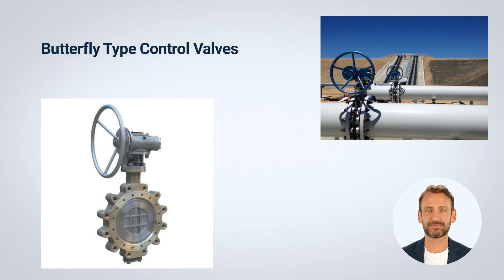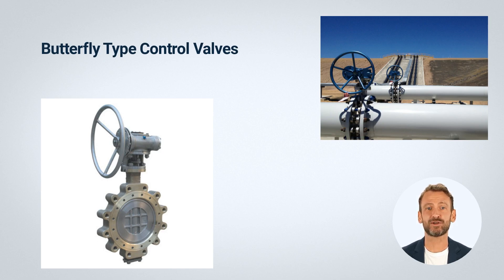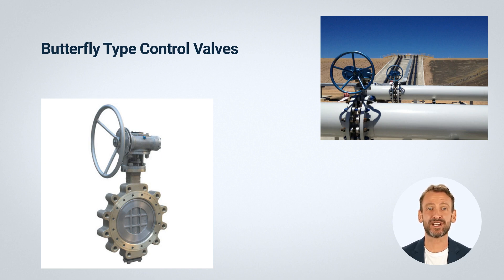Flow characteristics: butterfly valves offer good flow control and can provide bidirectional shutoff in some applications. However, they are typically not suitable for high-precision flow control applications, as they can suffer from poor throttling characteristics and poor flow control at low flow rates.